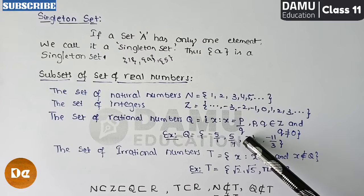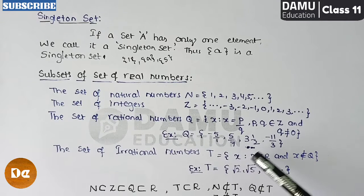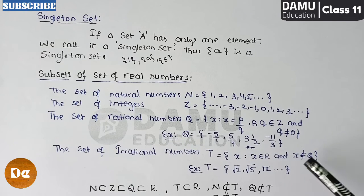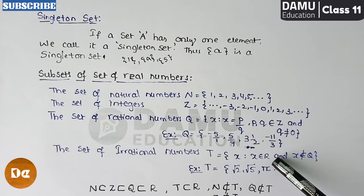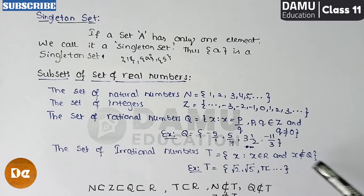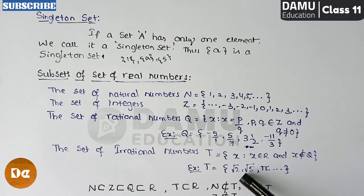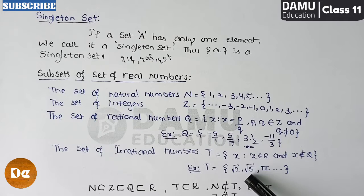The set of irrational numbers is denoted with capital T. In set-builder form: the set of all x such that x belongs to R (real numbers) and x does not belong to Q (rational numbers). That means x cannot be written in the format p/q. Irrational numbers are non-terminating and non-recurring (non-repeating) decimals.